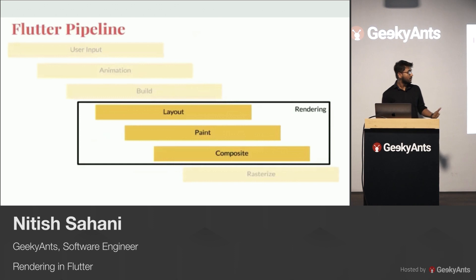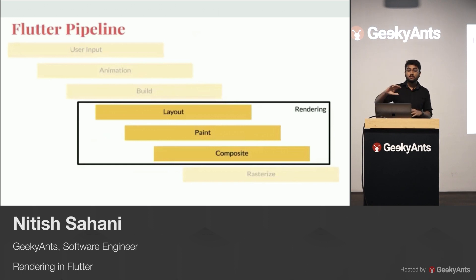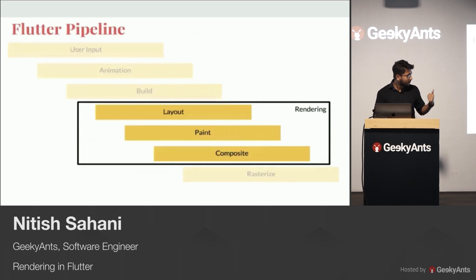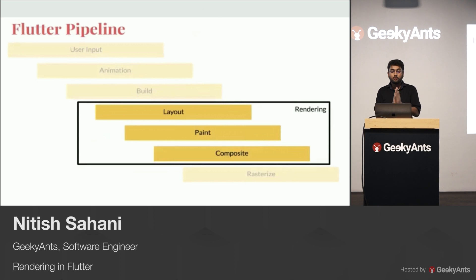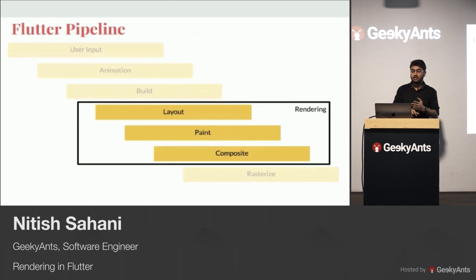First is the layout step, which is about positioning and sizing elements on the screen. Then there is the painting step, which is about figuring out what those elements actually look like. Then the compositing step stacks them together with draw order so that they can be composed on the screen as one thing. Finally, the rasterization step converts the abstract representation into actual physical pixels on the screen. This talk is focused on layout, painting, and compositing.